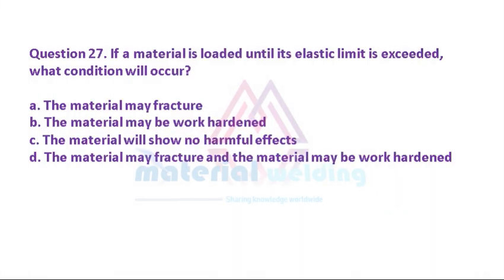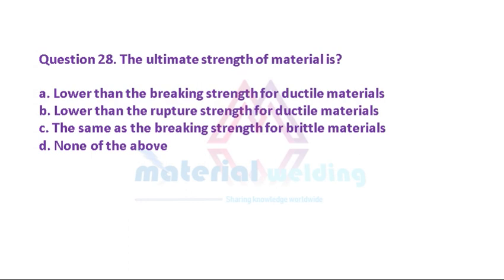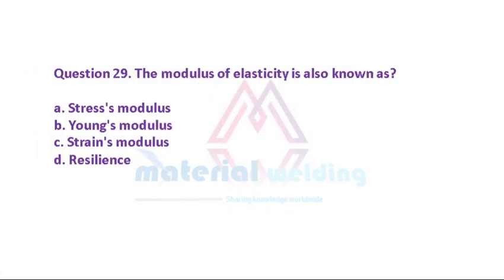Question 27: If a material is loaded until its elastic limit is exceeded, what condition will occur? A. The material may fracture. B. The material may be work hardened. C. The material will show no harmful effects. D. The material may fracture and the material may be work hardened. Question 28: The ultimate strength of a material is: A. Lower than the breaking strength for ductile materials. B. Lower than the rupture strength for ductile materials. C. The same as the breaking strength for brittle materials. D. None of the above. Question 29: The modulus of elasticity is also known as: A. Stresses modulus. B. Young's modulus. C. Strains modulus. D. Resilience.